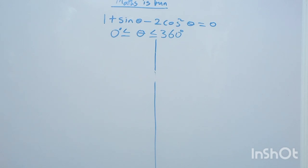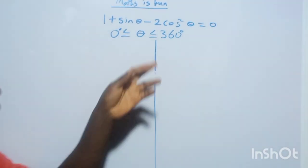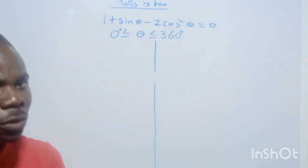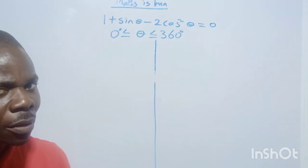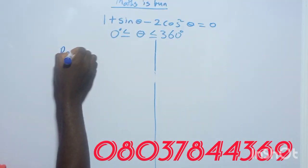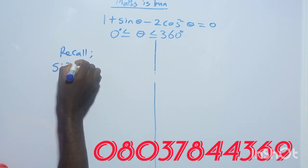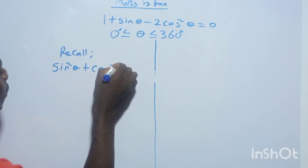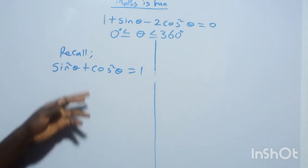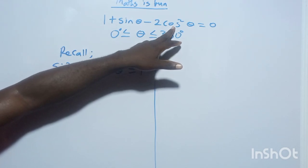Look at this question: 1 + sinθ − 2cos²θ = 0. Do you have any recall of the identities I have taught? Remember that I taught you this: sin²θ + cos²θ = 1. Yes, I've taught you this. Now I'm looking at this and they're almost the same thing, so you can find an identity for cos²θ.